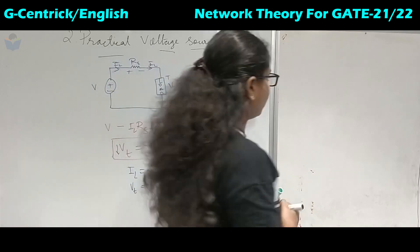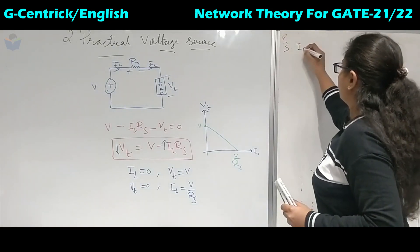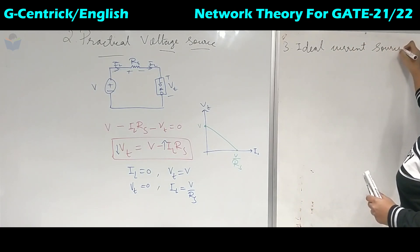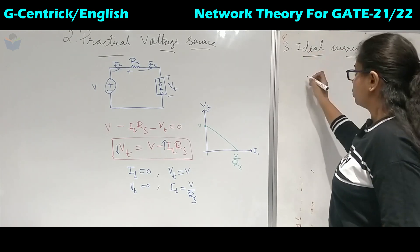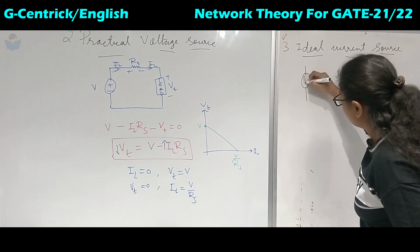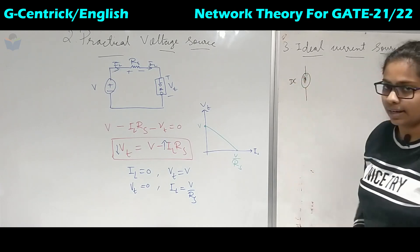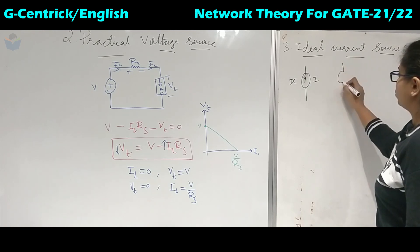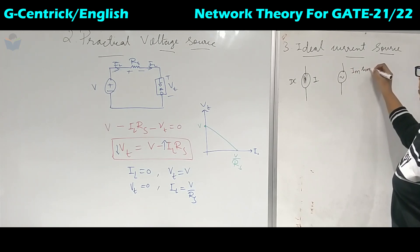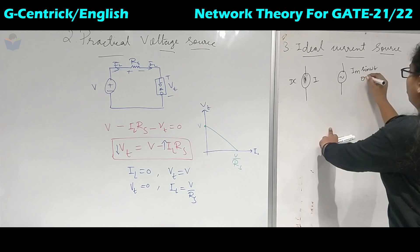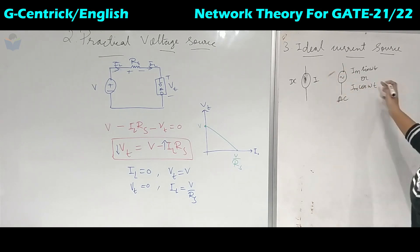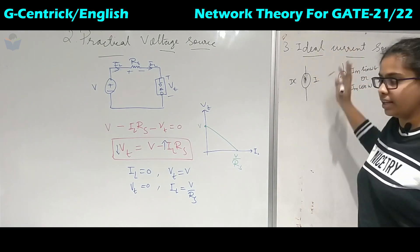Next we move to the ideal current source. First, the symbolic representation: for DC, we represent it with an arrow inside a circle, labeled I. For AC, the symbol is the same but the magnitude changes — IM sin(ωt) or IM cos(ωt). This is the symbolic representation of the ideal current source.